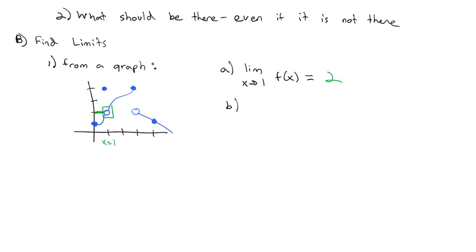We could also find the limit as x approaches 4. Close to an x-value of 4, we see that function is close to 1. This time it turns out the point actually is there — but it doesn't matter if the point is there or not. Close to there, the y-coordinate is 1.